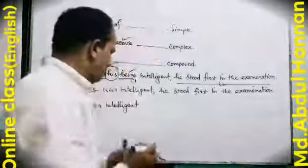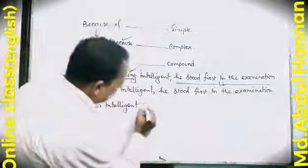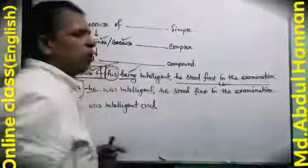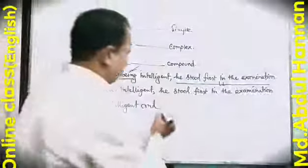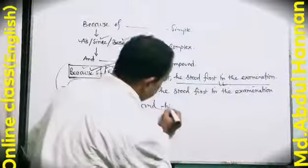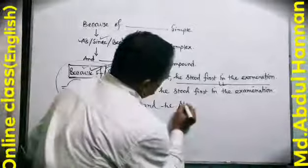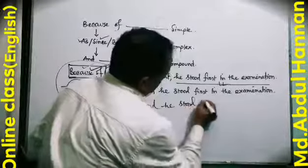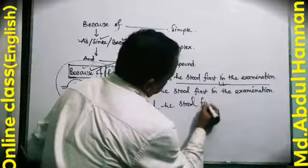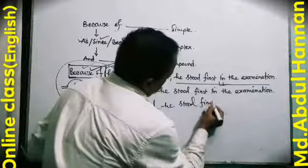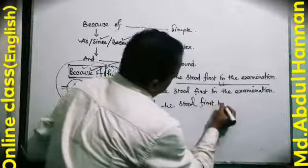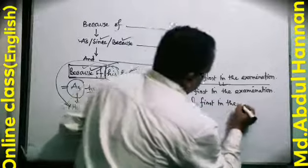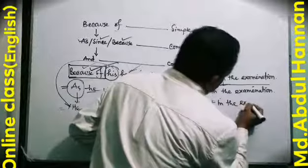And he stood first in the examination. The compound sentence joins two independent clauses together using the coordinating conjunction 'and'.